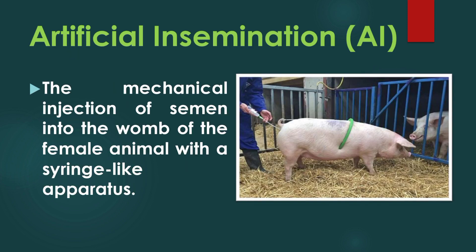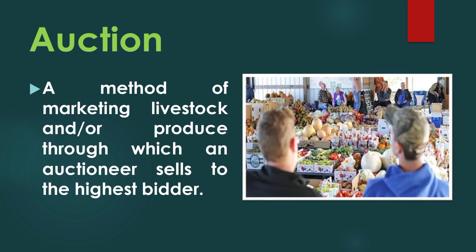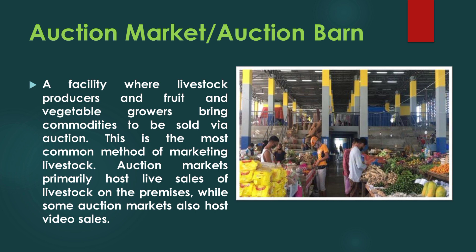Artificial insemination (AI): the mechanical injection of semen into the womb of the female animal with a syringe-like apparatus. Auction: a method of marketing livestock and/or produce through which an auctioneer sells to the highest bidder. Auction market or auction barn: a facility where livestock producers and fruit and vegetable growers bring commodities to be sold via auction. This is the most common method of marketing livestock. Auction markets primarily host live sales of livestock on the premises, while some also host video sales.